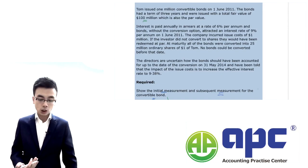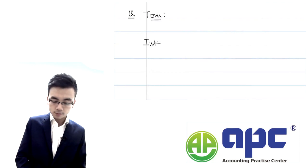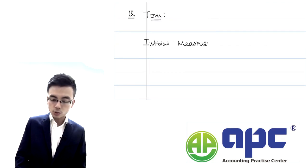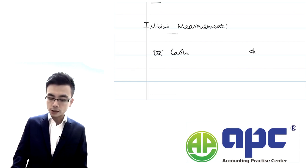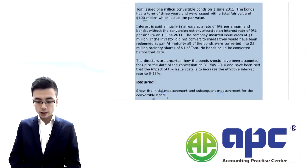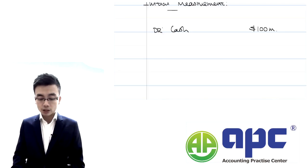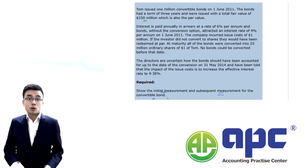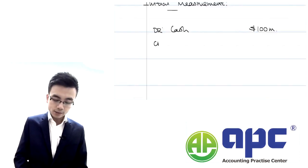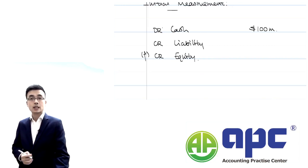For initial measurement, since we issued the bond and received cash worth $100 million, we debit cash for $100 million. That would be a financial liability from the company's point of view. It's not a derivative, and we haven't adopted the fair value option, so we'll use the amortised cost method. We credit to split into liability and the balancing figure goes to equity.